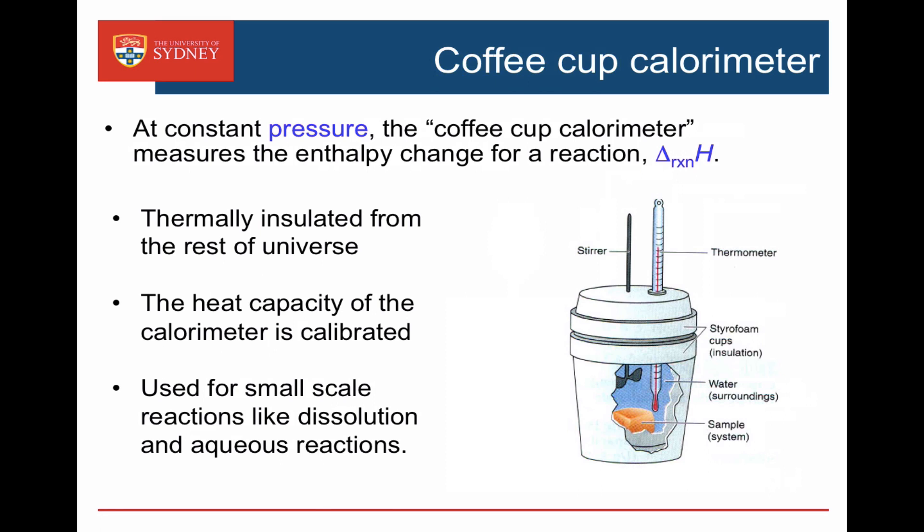On a smaller lab scale, a coffee cup calorimeter — a styrofoam cup containing water — works at constant pressure, at atmospheric pressure. The heat change measured from a coffee cup calorimeter experiment gives us the enthalpy change of the reaction.